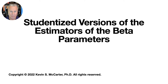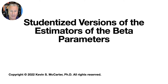We've been laying some important groundwork over the last several lectures. We derived several important distributional characteristics of the least squares estimators, in particular their means, variances, and standard errors. We then determined the form of the sampling distributions of the least squares estimators of the beta parameters when the model error terms are normally distributed. When that is the case, the least squares estimators are normally distributed themselves. We also showed that in this situation, the standardized versions of the least squares estimators have a standard normal distribution.